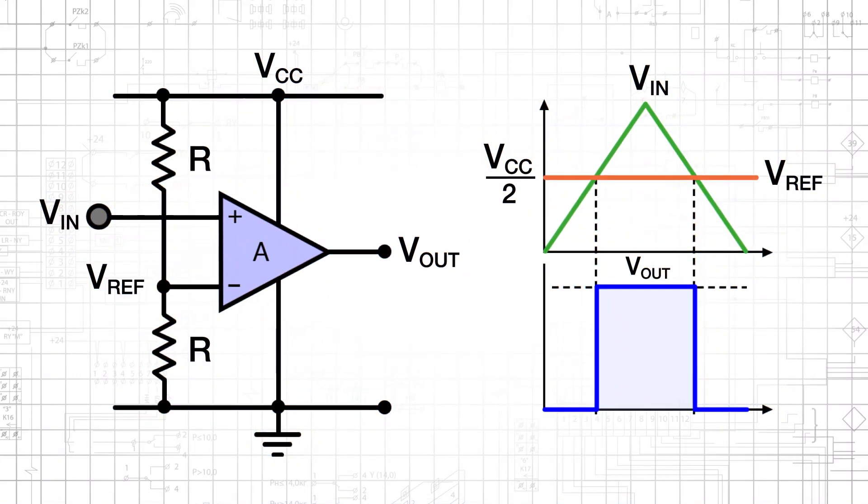A common comparator application is producing an output signal that indicates whether an input signal is above or below a specified threshold voltage. For example, you might want to manually deactivate one of the components on a circuit board when its supply voltage drops below 3 volts.